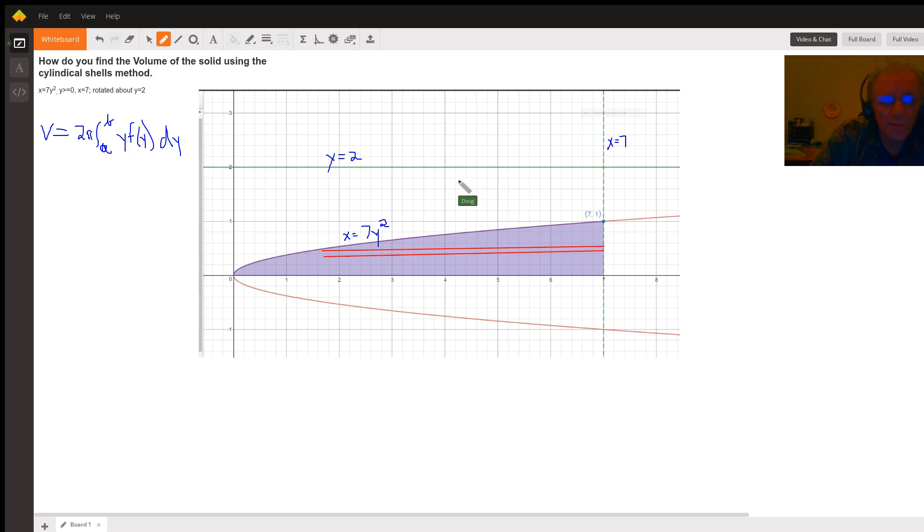And we want to come up with an expression for the average radius, which is the distance from the axis of revolution to the center of the shell. And we want to come up with an expression that represents the height of a typical shell. This y is really the average radius, this f of y is really the height of the shell, and dy represents the thickness of the shell.